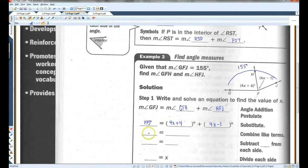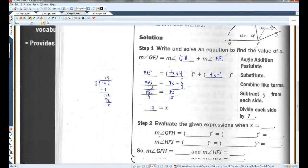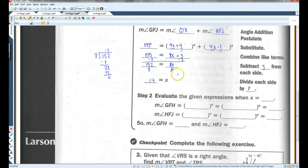So we substitute. So 155, I'm going to combine like terms. 4X plus 4X is 8X. 4 minus 1 is 3. I'm going to subtract 3 from both sides. 155 minus 3 is 152. I subtracted 3 from both sides. Now I'm going to divide each side by 8. So the 8's cancel out. If you can do this in your head, great. If not, you can always do long division.